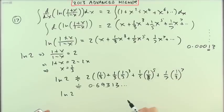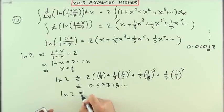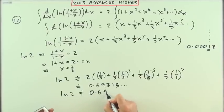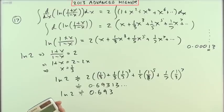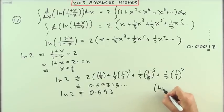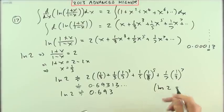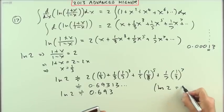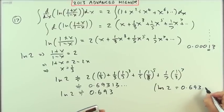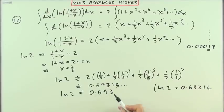So ln(2) should be approximately 0.693. We'll just double-check—I'll put a wee note here. ln(2) actually equals 0.69314, so actually as far as the fourth decimal place there. That was all there was to question 17.